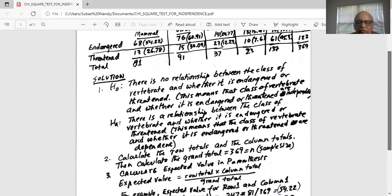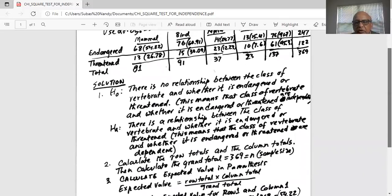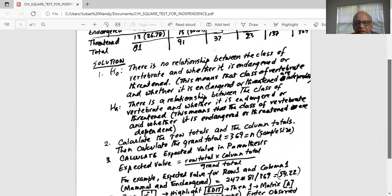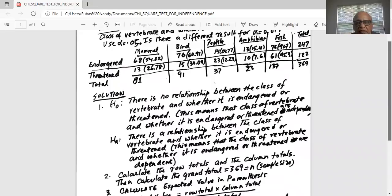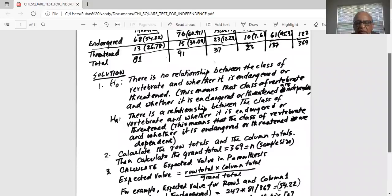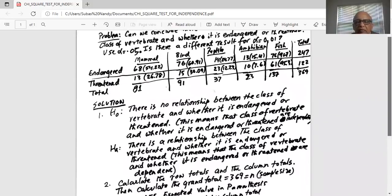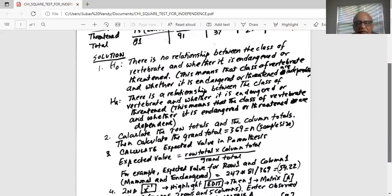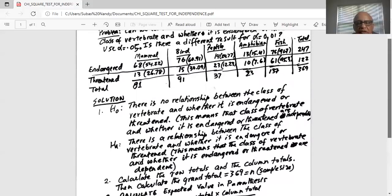As I told you, first we calculate the row totals and the column totals. Then we add the two row totals or the five column totals and we get a grand total of 369. That is my sample size. Now, I will calculate the expected count in each cell. The formula for the expected value is row total times column total divided by grand total. So for the mammal, I get 54.22. I repeat the calculation for all the expected counts.